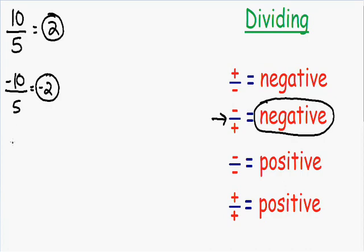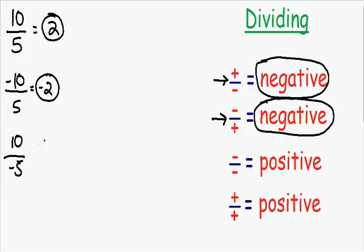Let's say we had a positive ten and a negative five. Once again we have one positive number and one negative number — a positive on the top and a negative on the bottom. A positive and a negative is going to give us a negative answer, so our answer is once again going to be negative two.